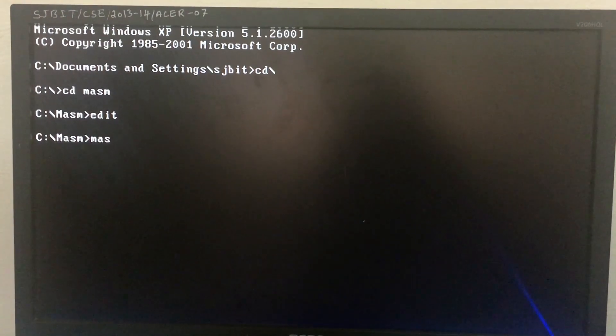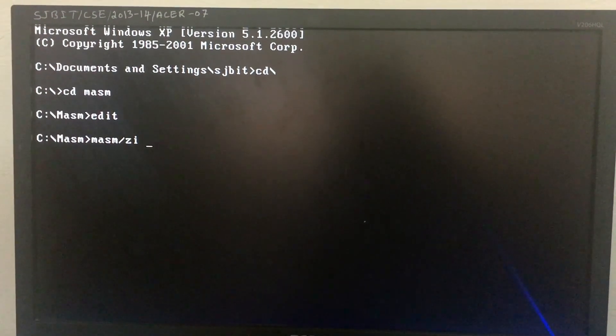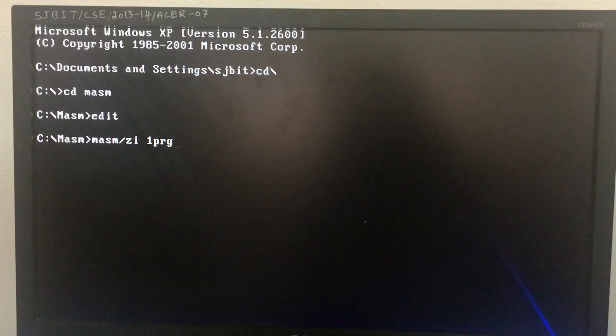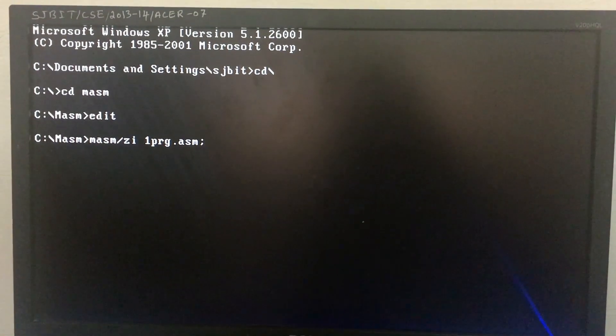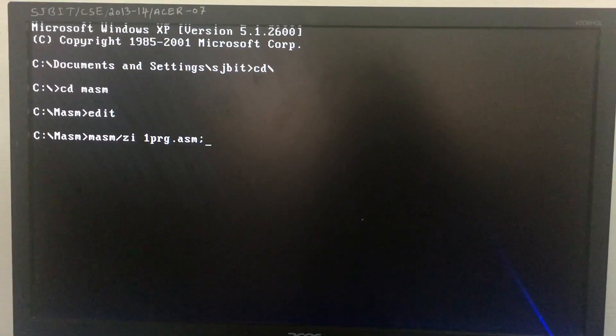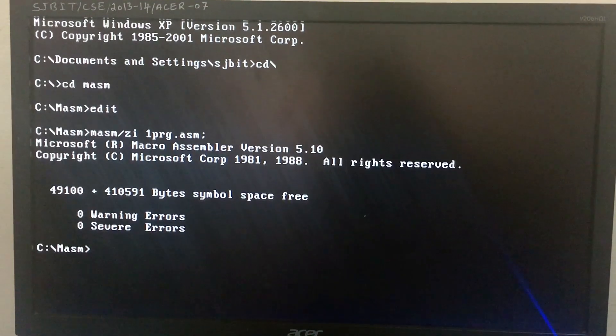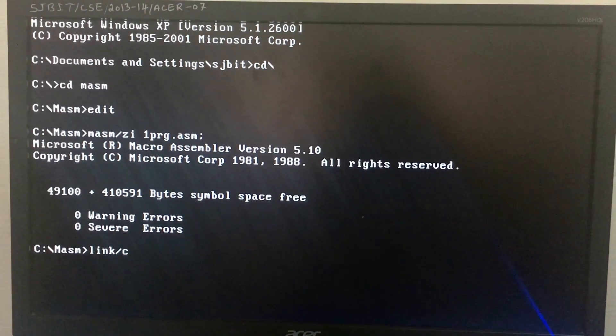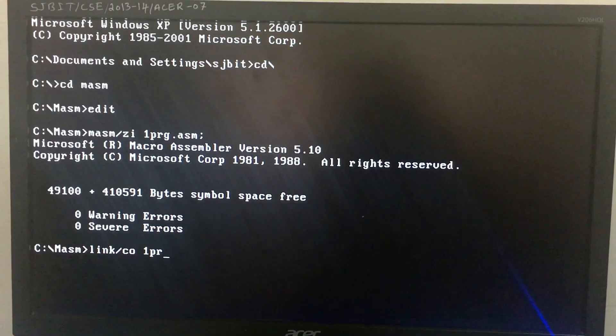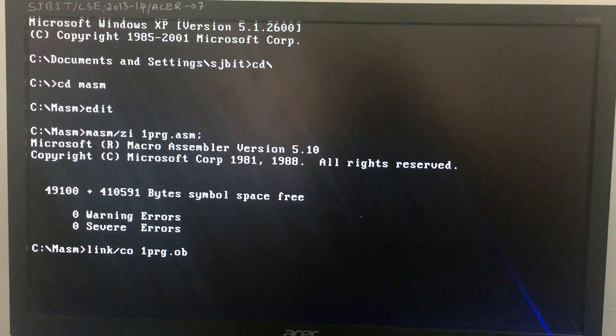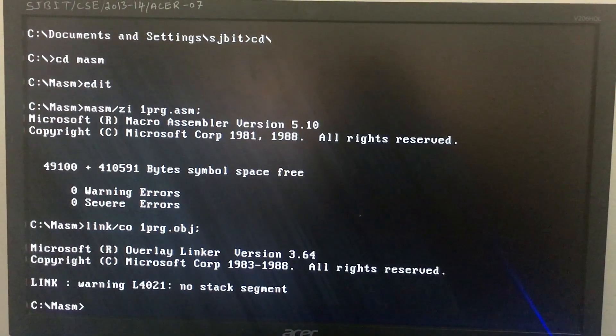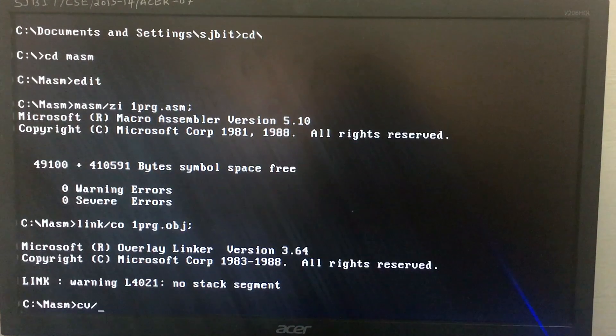To run the program, we give the following commands. The MASM command is used for the compilation of the program to object file. This command is followed by semicolon, and once you press enter it shows there are no errors. Once there are no errors, you give the following command. This command is used to link the program. It says there are no stack segments used.